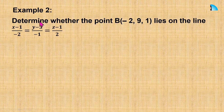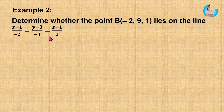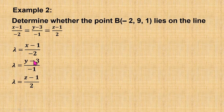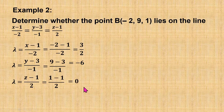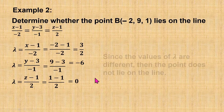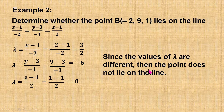For the second example, determine whether the point B lies on the line given. The equation is in Cartesian form, so first we separate each term using lambda. Substituting the coordinates: when x = −2, lambda = 3/2. When y = 9, lambda = −6. When z = 1, lambda = 0. Since the values of lambda are different, we conclude that the point does not lie on the line.